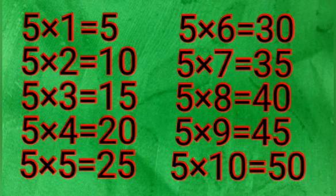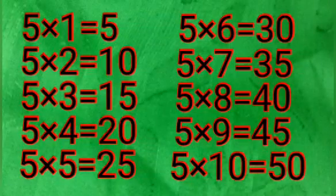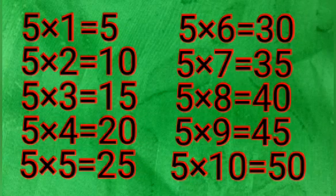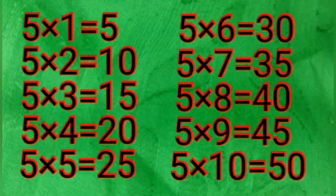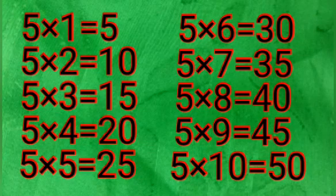Five sixes are 30. Five sevens are 35. Five eights are 40. Five nines are 45. Five tens are 50.